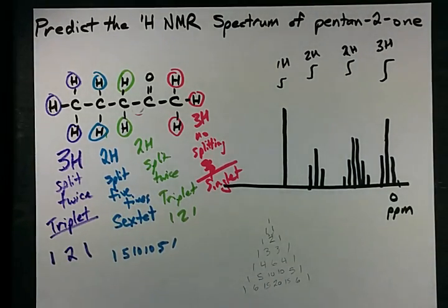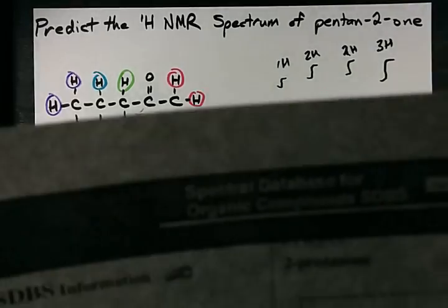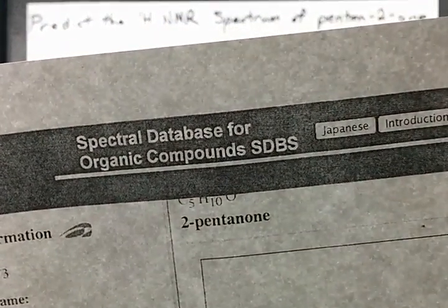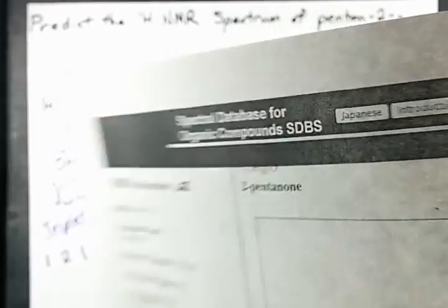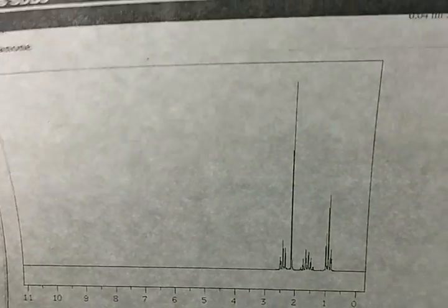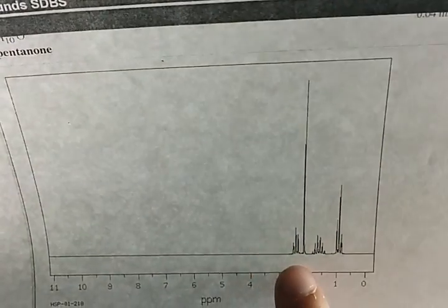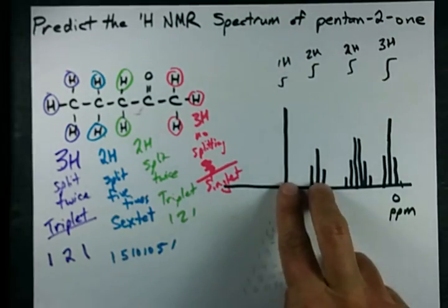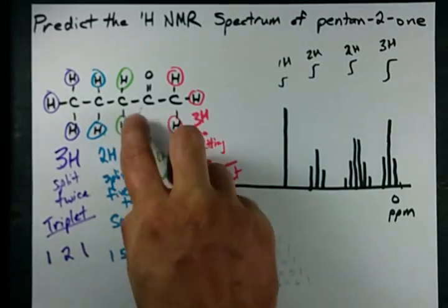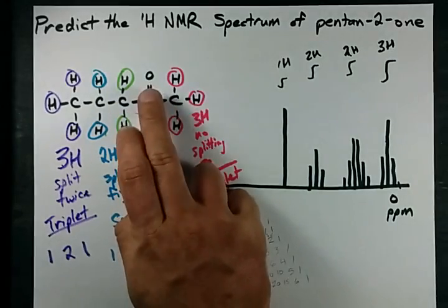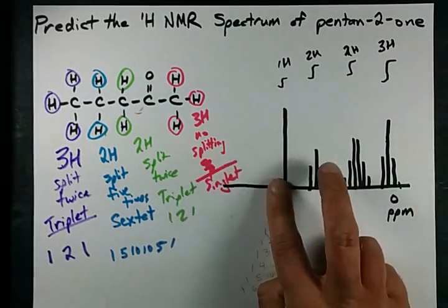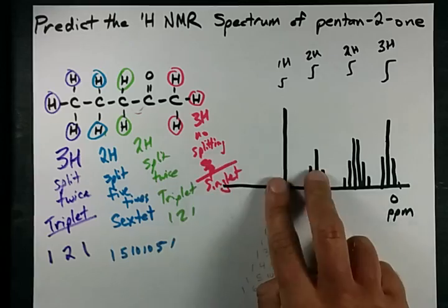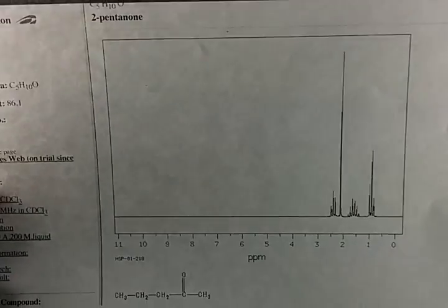Now, I've taken the liberty of downloading the NMR spectrum from the spectral database for organic compounds of two pentanone. Let's take a look at what it looks like. Ah, interesting. So here we have the triplet first and then the singlet. They were both close-ish. They were both adjacent to the C double bonded O. I don't know. There was no real reason for me to put it in this order. And it turns out it was in the opposite order. It's always tough to predict the order of peaks when